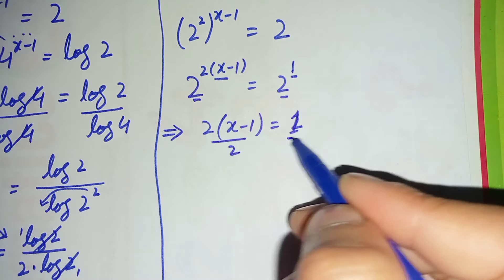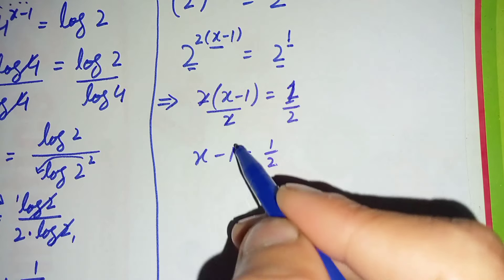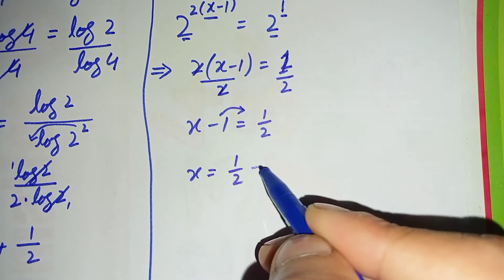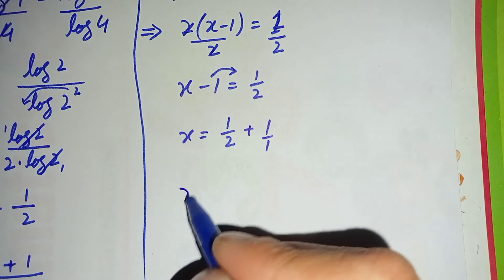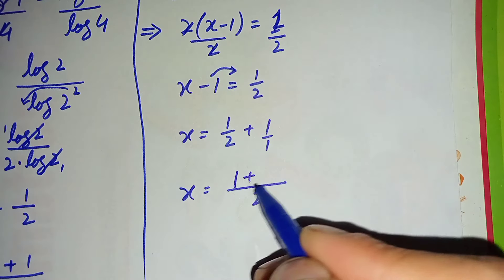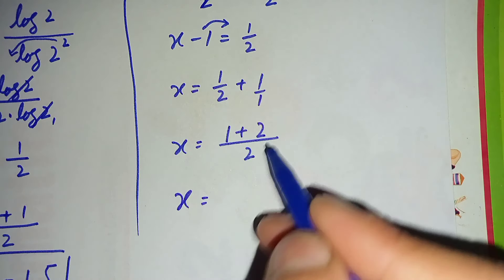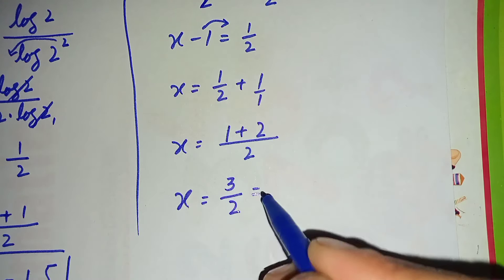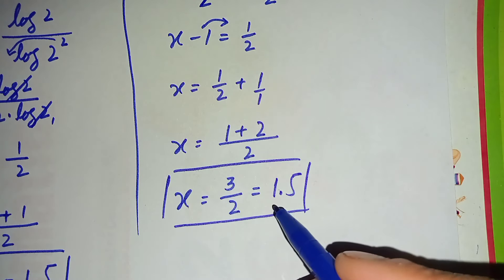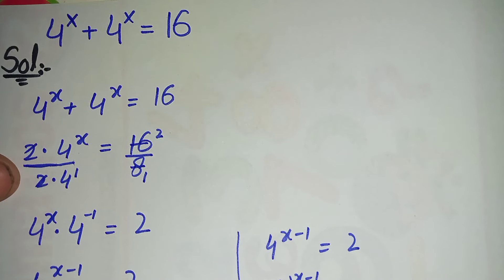Comparing powers gives 2 times x minus 1 is equal to 1. We divide both sides by 2, so x minus 1 equals 1/2. Shifting negative 1 to the right gives x equals 1/2 plus 1. Taking the LCM, this becomes 1 plus 2 over 2, so x equals 3/2, which is also 1.5. This confirms our answer using the second method. Thanks for watching, and don't forget to subscribe!